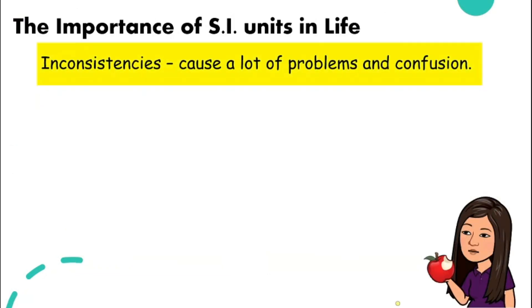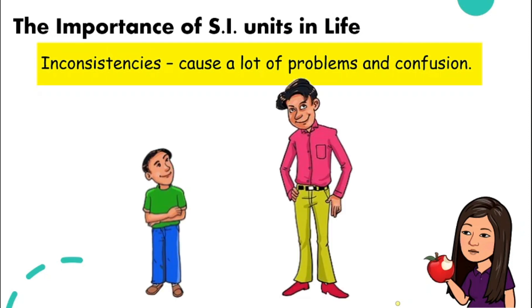So it is very important that we use SI units. Why? Because inconsistency can cause a lot of problems and also confusion. Imagine if we need to know the height, your height. And if one person use meter and the other person use feet and inches, it can be quite confusing. So we need to be consistent.